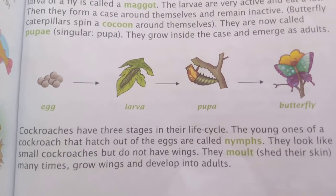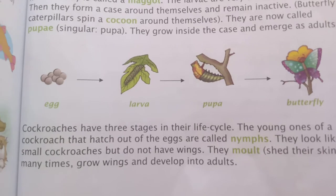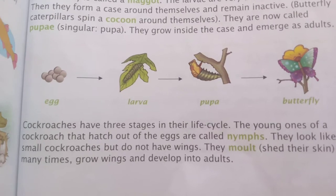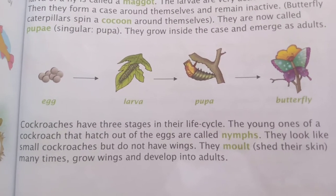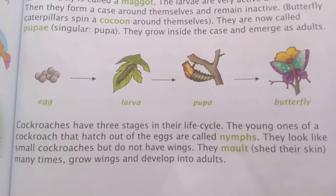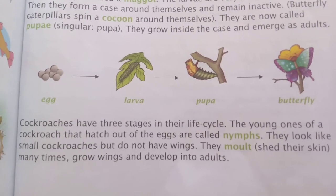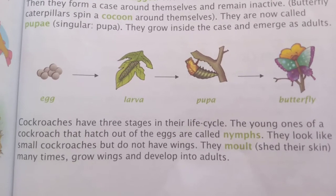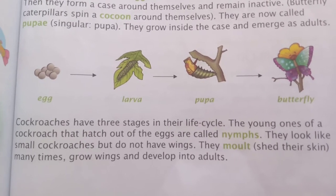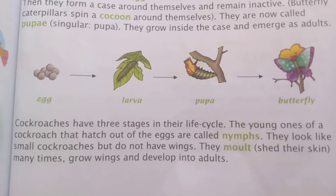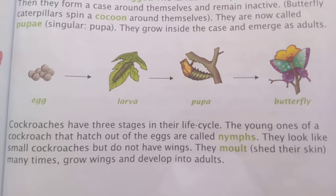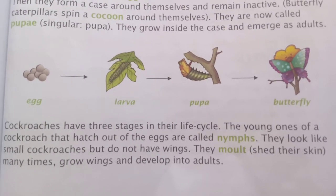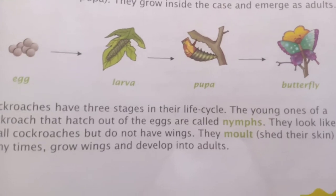Cockroaches have 3 stages in their life cycle. The young ones of a cockroach that hatch out of the eggs are called nymphs. They look like small cockroaches but do not have wings. They moult — that is, shed their skin — many times, grow wings, and develop into adults.